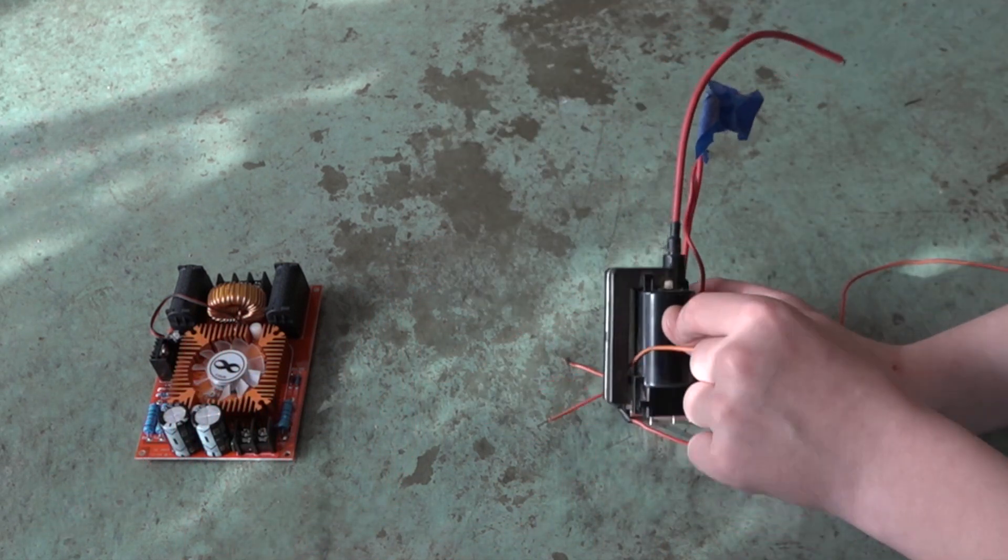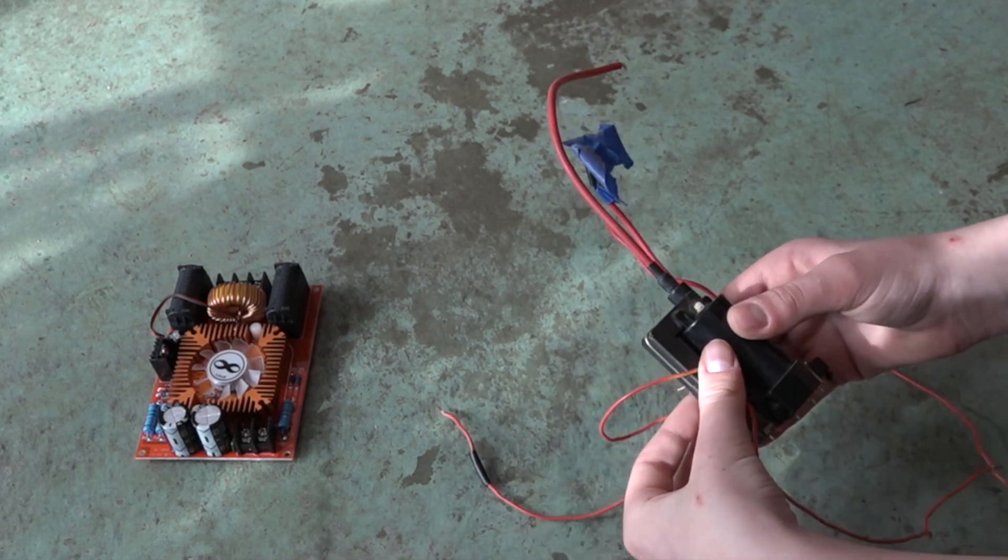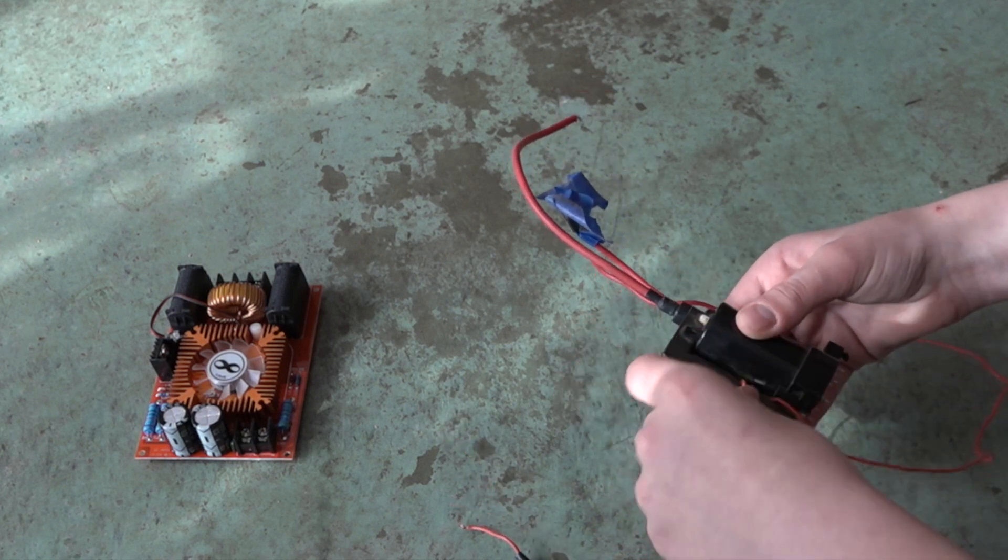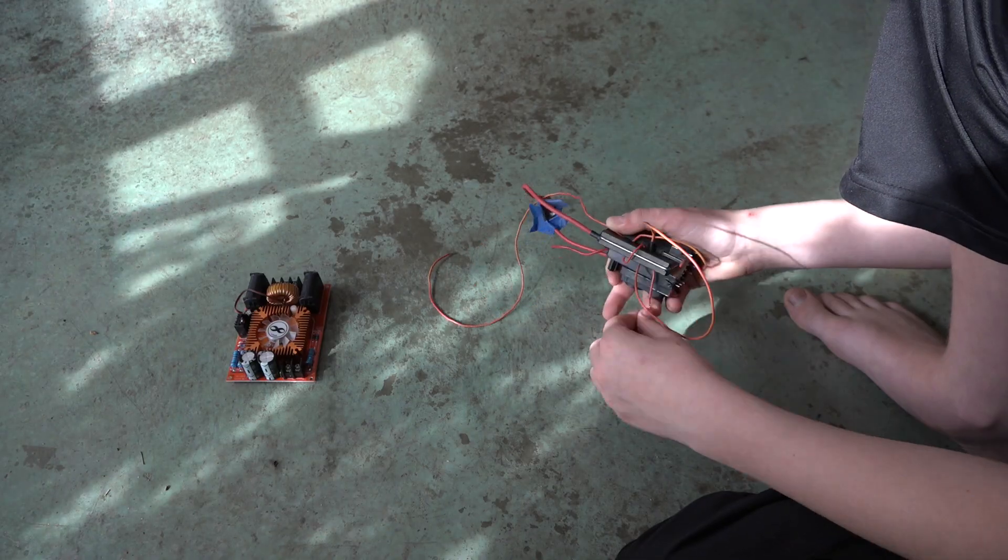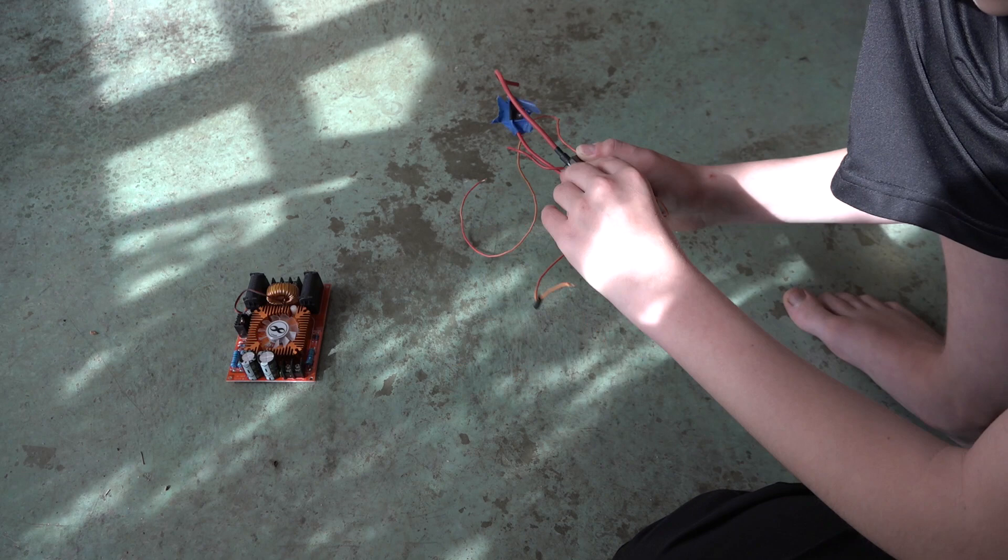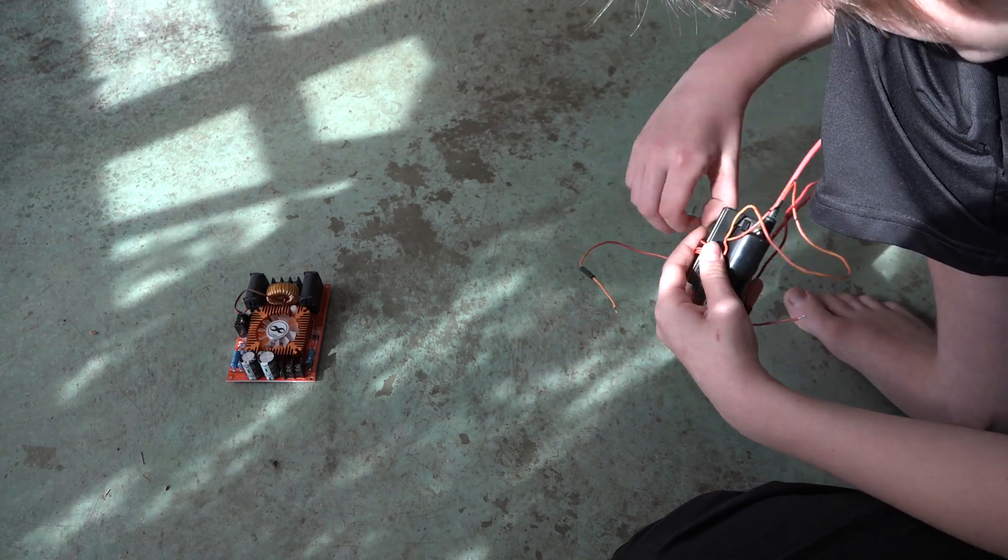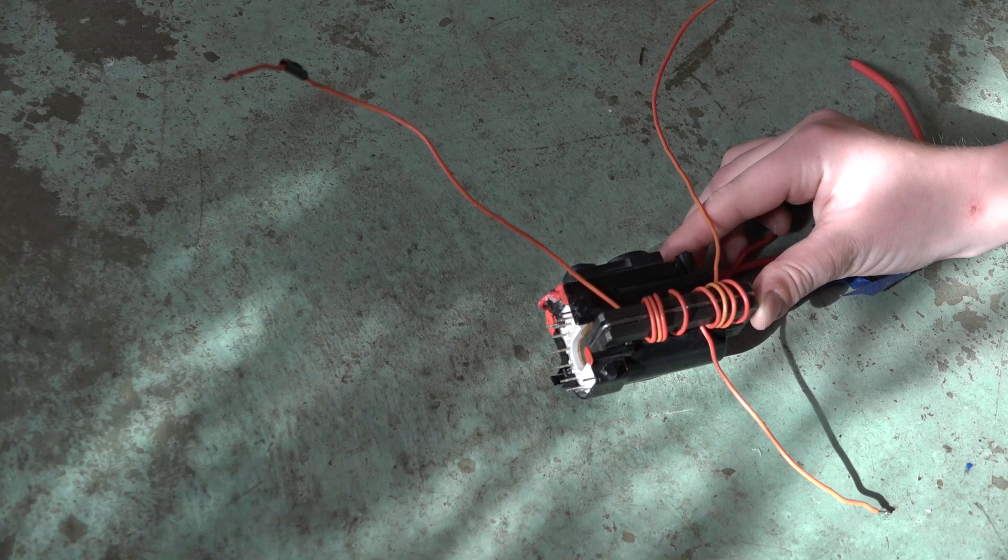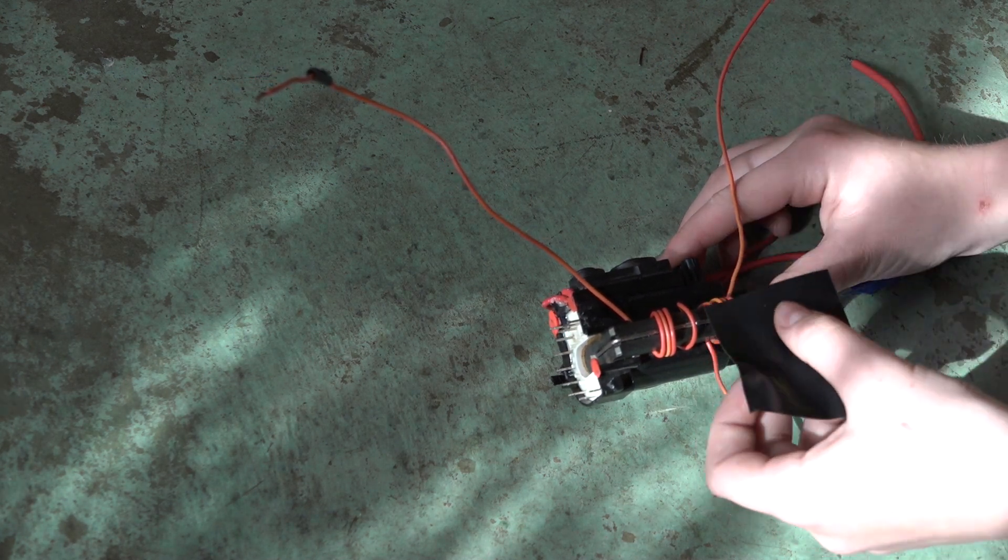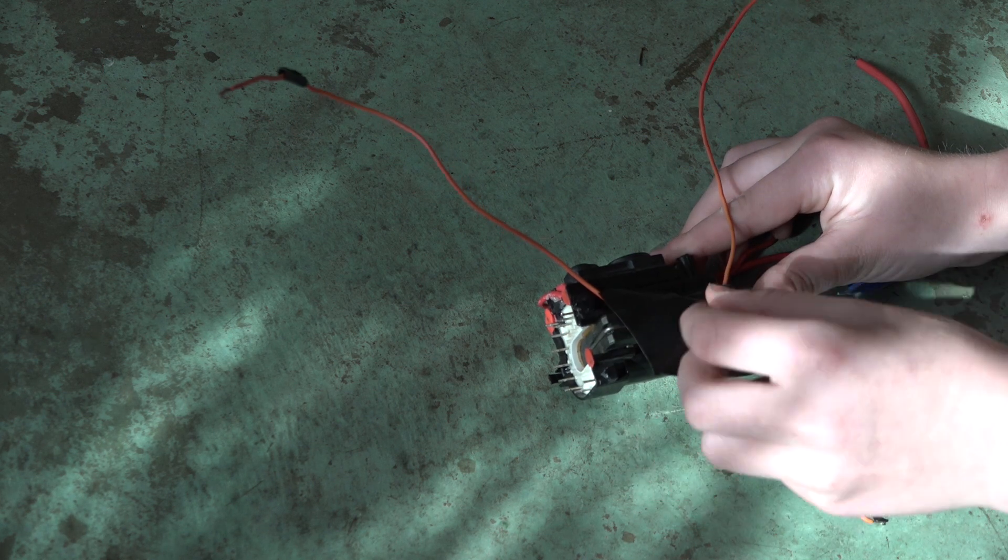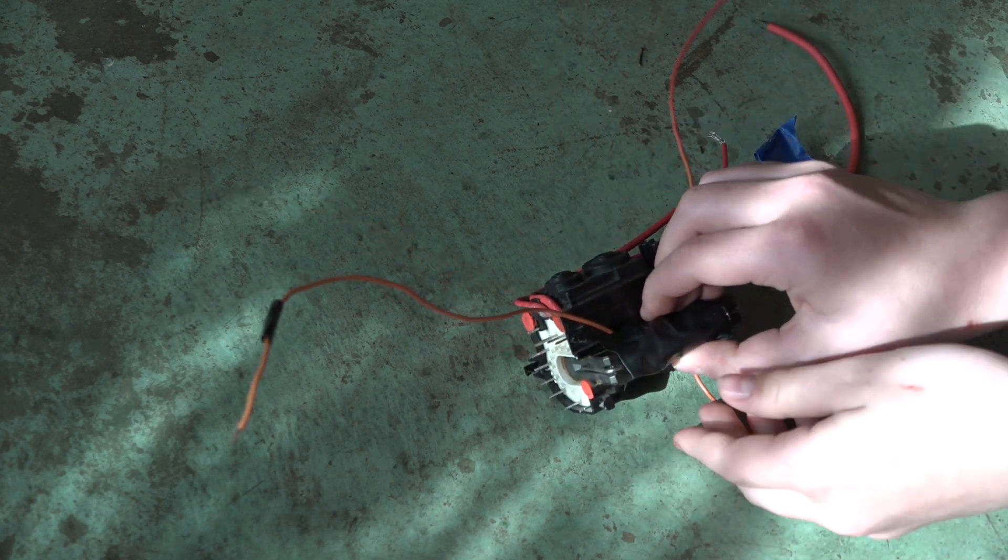So now we want to put it through this core part of the flyback transformer and wind it around. You'll want to wind it four times and then let your center tap poke out. Now we've got the core, the two coils wound with the center tap in middle. All you now just grab some electrical tape and stick that over the coils to insulate them like that.